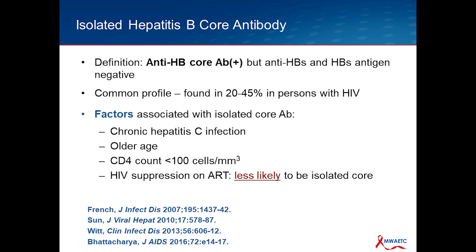What is the definition of an isolated core profile? When we send a standard hepatitis B panel, we measure the hepatitis B surface antigen, the surface antibody, and the core antibody. An isolated core profile is exactly that: the core antibody is positive while the surface antigen and surface antibody are negative. It's a common profile found in about 20 to 45 percent of persons with HIV. Factors associated with this profile include chronic hepatitis C co-infection, older age, CD4 count less than 100 (advanced immunosuppression), and individuals with HIV suppression on ART appear to be less likely to have an isolated core profile.